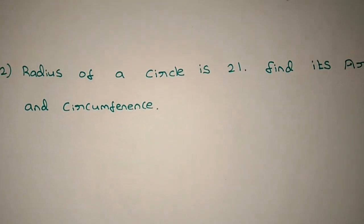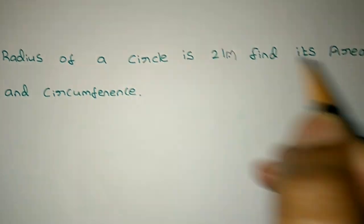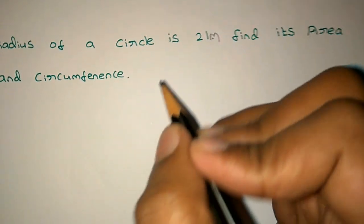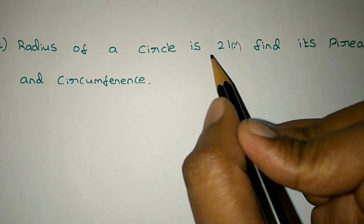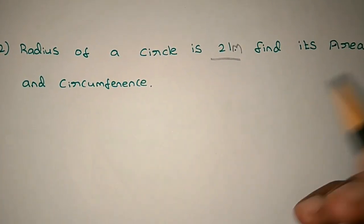Okay, next problem: radius of a circle is 21 meters. Find its area and circumference. The radius of a circle is 21 meters, so we will find the area and circumference.